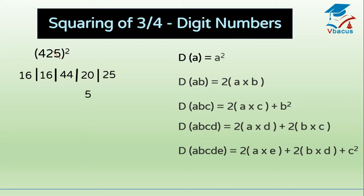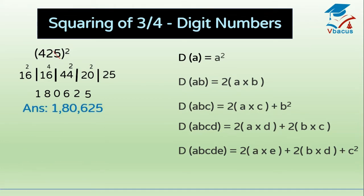Write 1 digit and the tens digit carries to the next column. Write 5, and 2 is carried over to 20: 20 plus 2 is 22 — write 2. 2 is carried over to 44: 44 plus 2 is 46 — write 6. 4 goes to 16: 16 plus 4 is 20 — write 0. 2 is carried over to 16: 16 plus 2 is 18. Your answer is 180625.